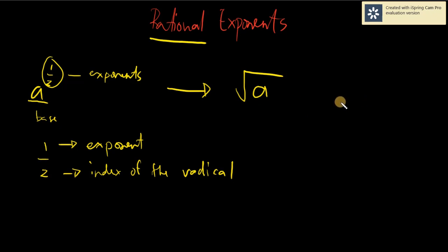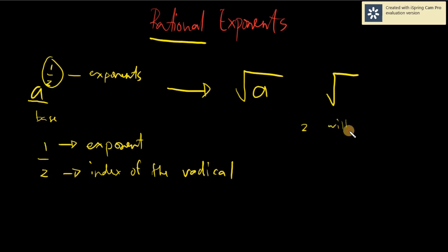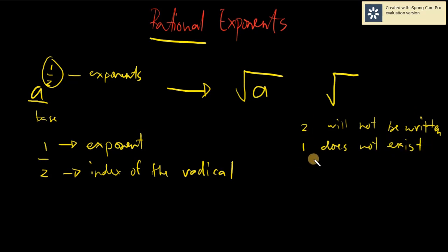When dealing with exponents and radicals, there are things we do not write. When you have a square root, you do not write the index two — by default it is two. There is no such thing as a first root. It's always square root, and square root is not written. If it is a cube root or fourth root and above, it is written. Index two is not written; index one does not exist.